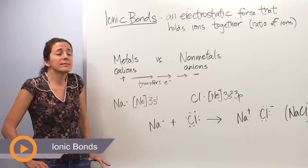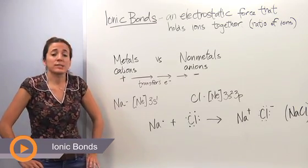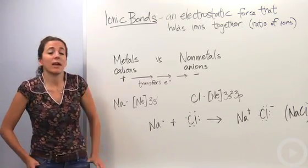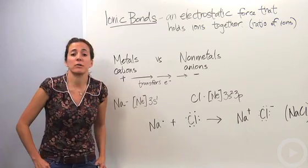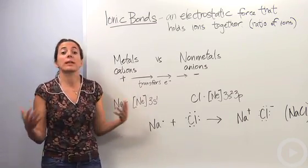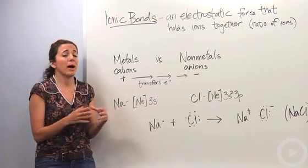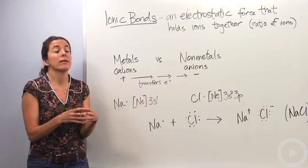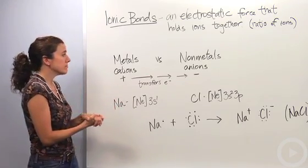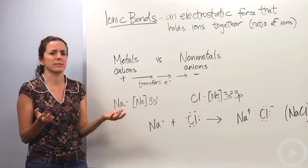All right, so we're going to talk about ionic bonds. An ionic bond is actually an electrostatic force that holds two ions together, and don't forget ions are charged particles. They actually give or receive extra electrons. So an ionic bond is the force that holds these ions together in a crystal, it's a ratio of ions.